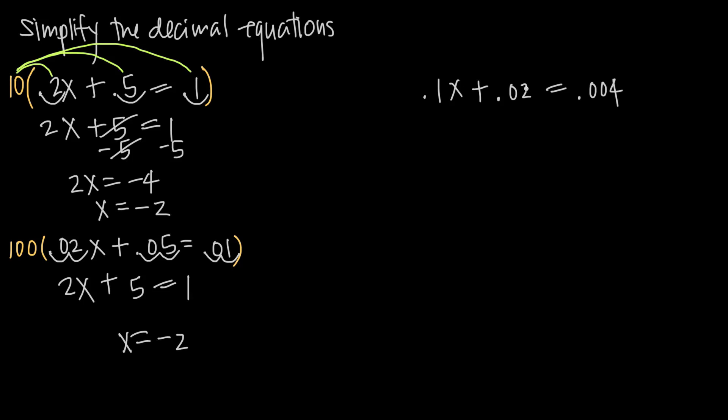Now what happens if I have decimals that end at different decimal places? .1 ends in the tenths place, .02 ends in the hundredths place, and .004 ends in the thousandths place. Well, remember, we always want to take the smallest decimal and multiply by whatever value is going to make that decimal a whole number.